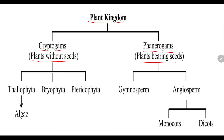The sub-kingdom cryptogames is divided into the divisions: thallophyta, bryophyta and pteridophyta. When we study the first division, that is thallophyta, we study about the algae — algae which always grow in water. Like green algae, brown algae, and red algae — all these are examples of thallophyta.